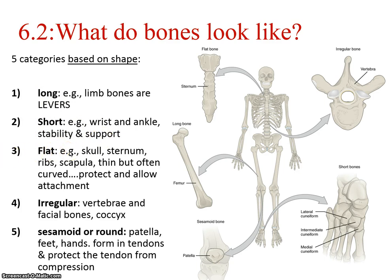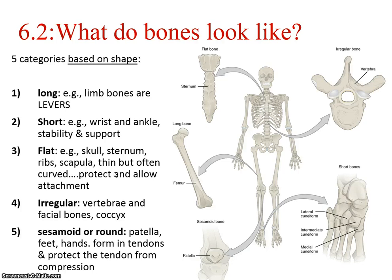Flat bones are just that — they have very little depth. Predominantly in the axial skeleton — the head, sternum, costals, and scapula — you have a lot of flat bones. These flat bones are protective, and since they're so broad, they allow attachment of a variety of ligaments, tendons, and muscles.